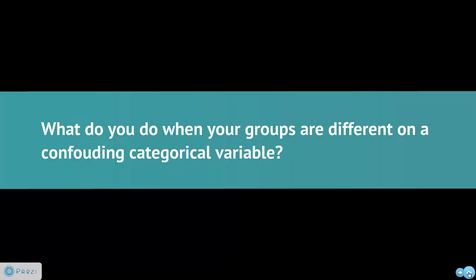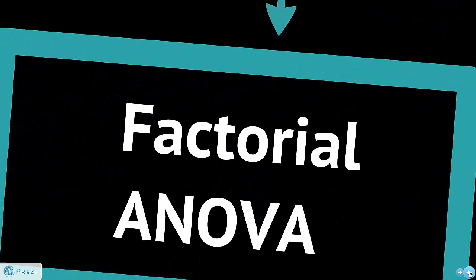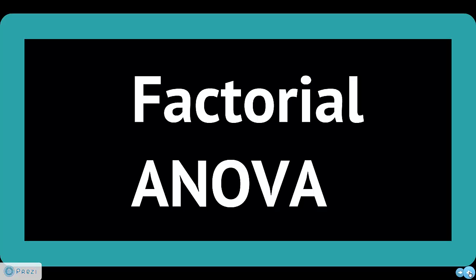Well, what do we do when our groups are different on a confounding categorical variable? And categorical variables are just variables - say men and women are different. One group has mostly men, the other has mostly women. Hey, that might mess up our analysis. What do we do then? Well, for that, we have a factorial ANOVA. Again, it's kind of a scary word, maybe, but it's actually very simple, and it's just a variation on an ANOVA. So we're taking all the things we've already learned, tweaking it a bit.